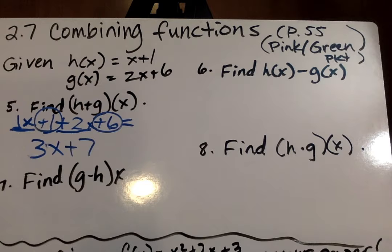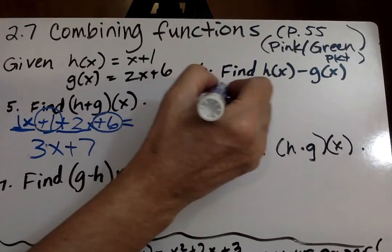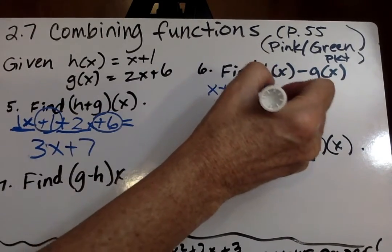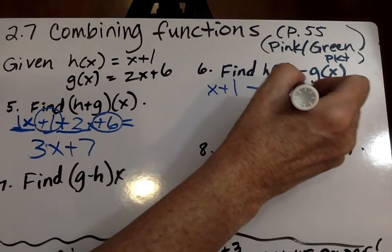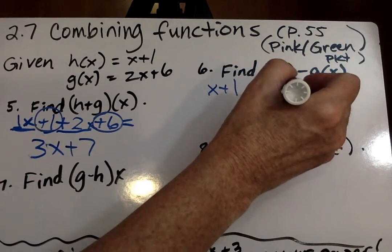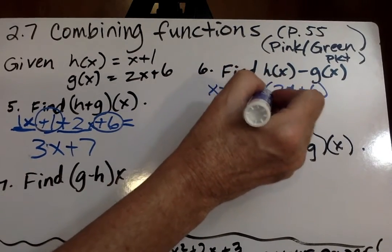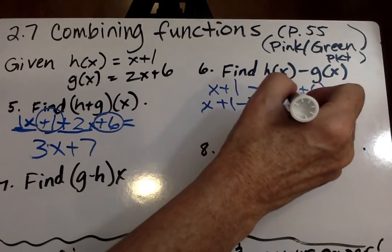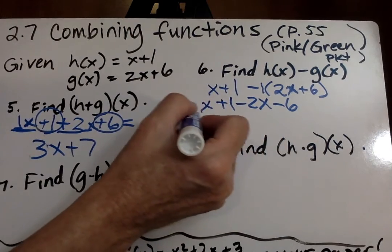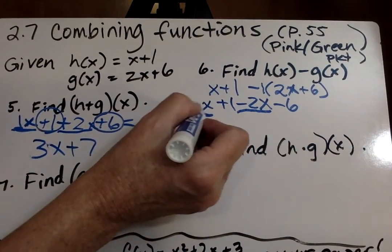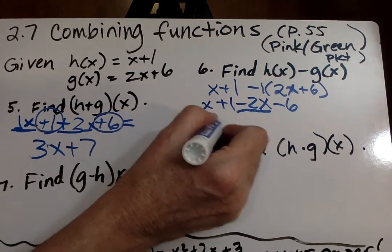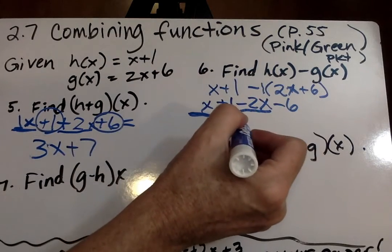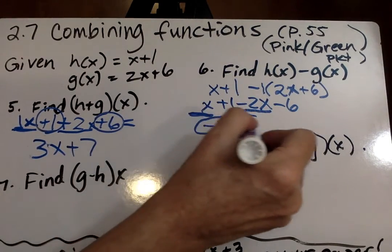Next on your paper number 6, we have find h of x minus g of x. So h of x is x plus 1 minus g of x, and don't forget your parentheses, and that's an x right there. So then I distribute a negative 1 through there, and basically that just changes the sign. So we have x plus 1 minus 2x minus 6. Then I combine like terms, I'm going to underline the x's, along with the sign in front. x minus 2x is a negative 1x, or you can just put negative x, plus 1 minus 6 minus 5. And we're done.